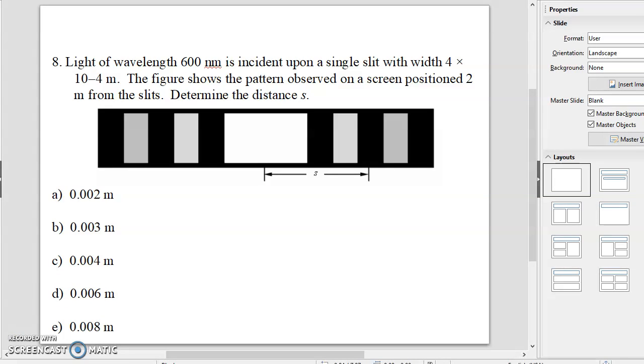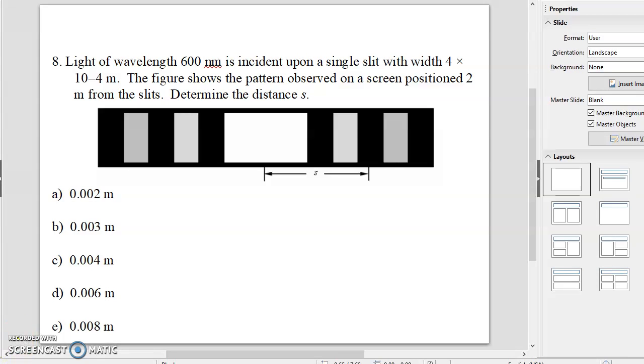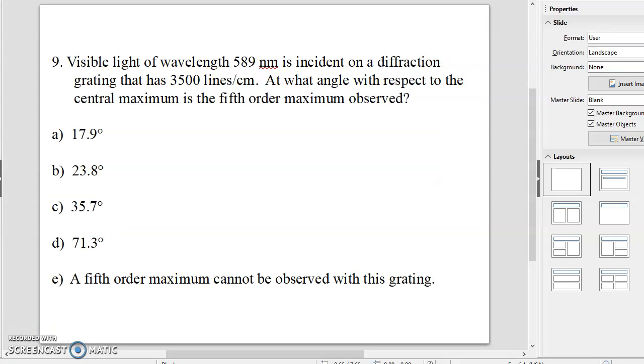Continuing on to the next one. Number nine. The visible light of wavelength 589 nanometers is incident on a diffraction grating that has 3,500 lines per centimeter. At what angle, with respect to the central maximum, is the fifth order maximum observed? And the answer to that one is, of course, E. A fifth order maximum cannot be observed with this grating. You can't get there from here with that sort of a system.